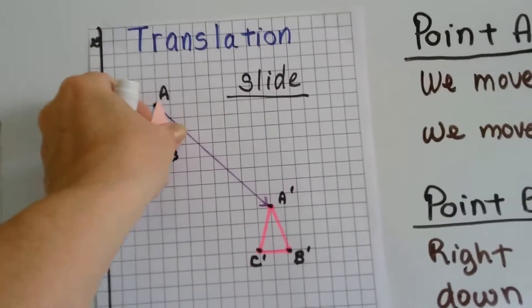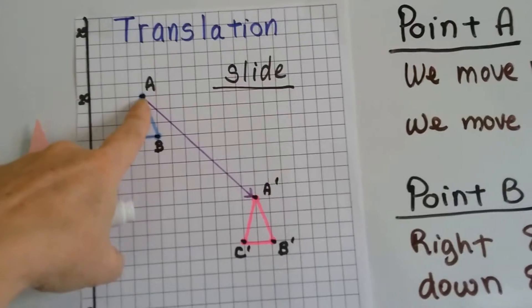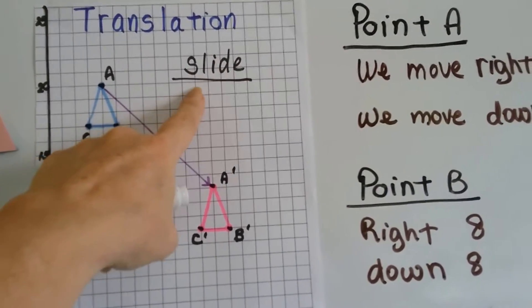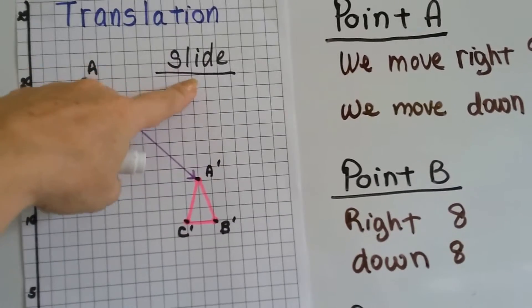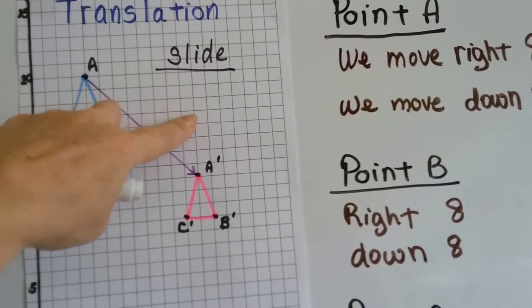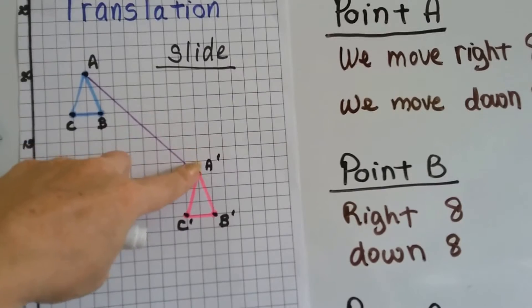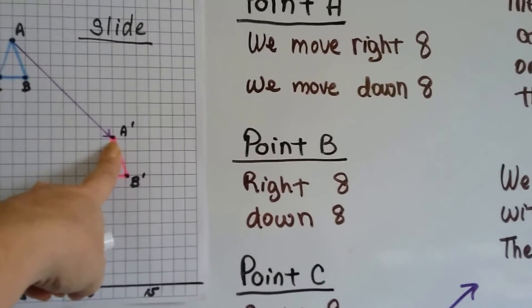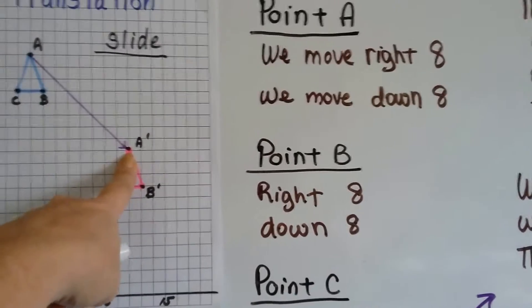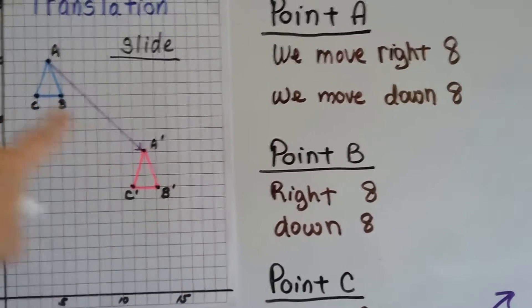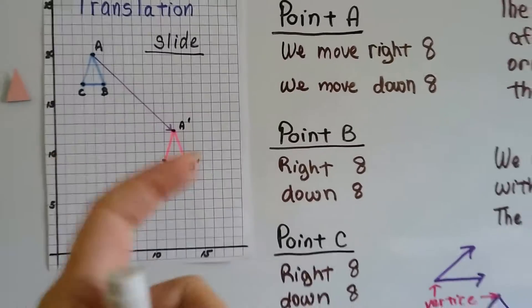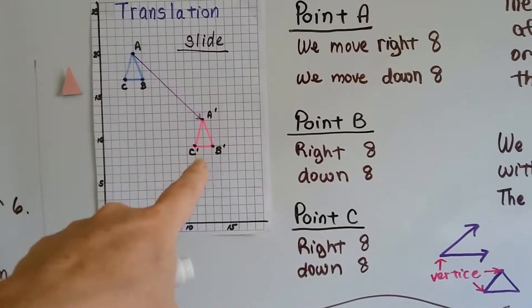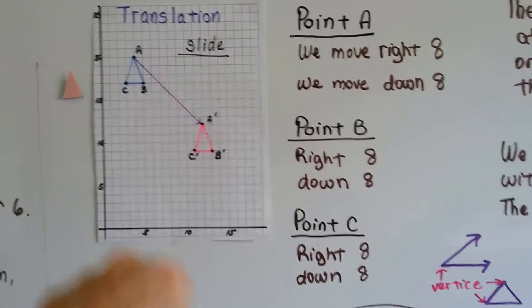So let me take my little magnet off of here. If we go across to the right 8, 1, 2, 3, 4, 5, 6, 7, 8, and we go down 8, 1, 2, 3, 4, 5, 6, 7, 8 will be at this point, this A, which is called A prime. And if we do that with B and with C, if we move right 8 and down 8, it'll put us exactly at this pink triangle.